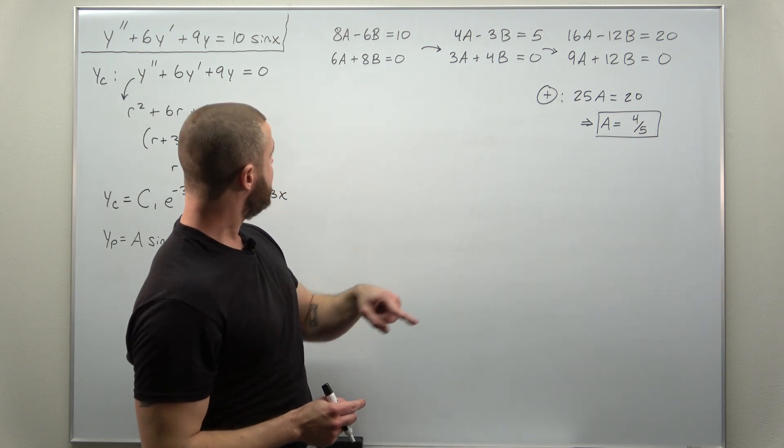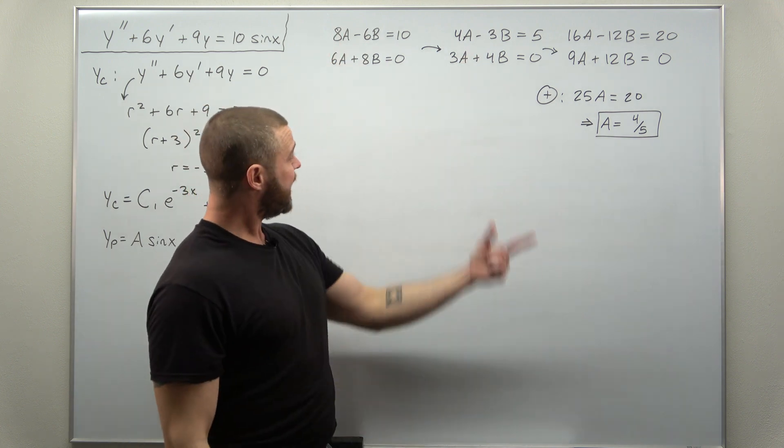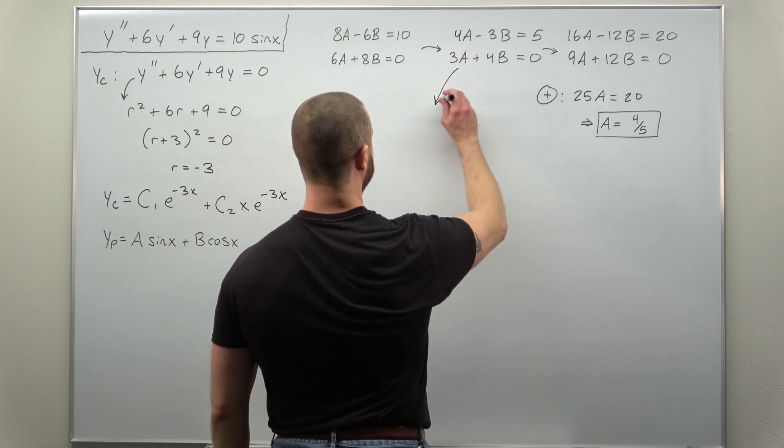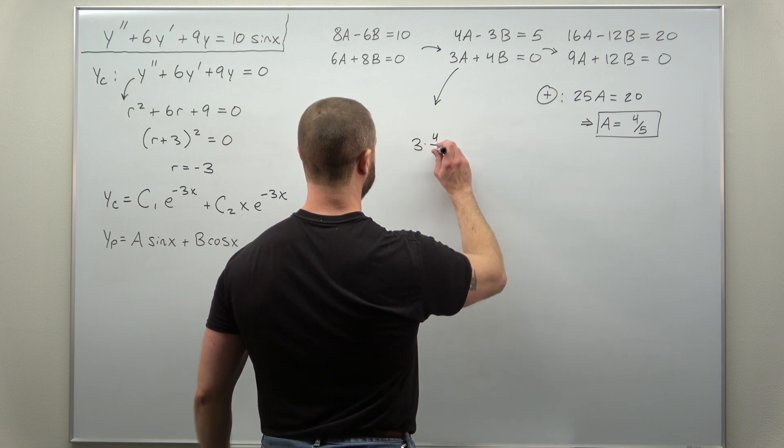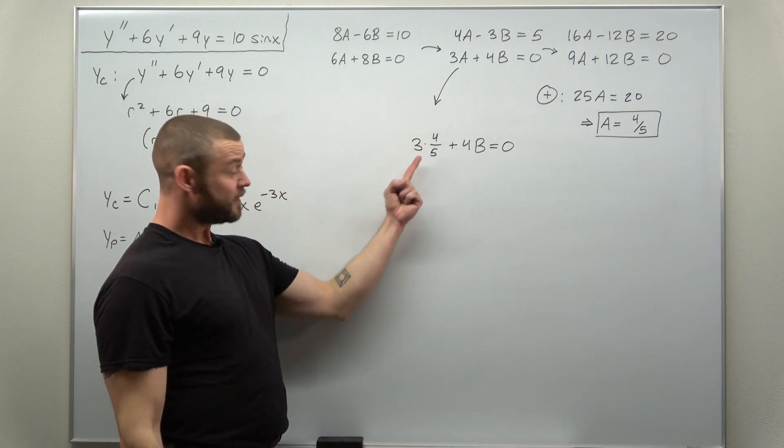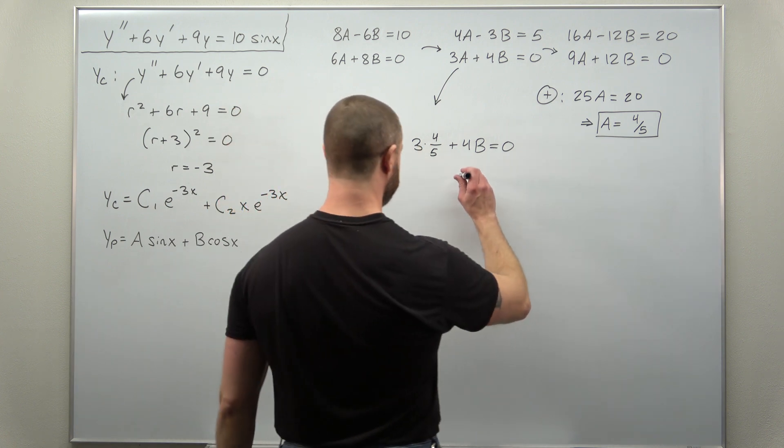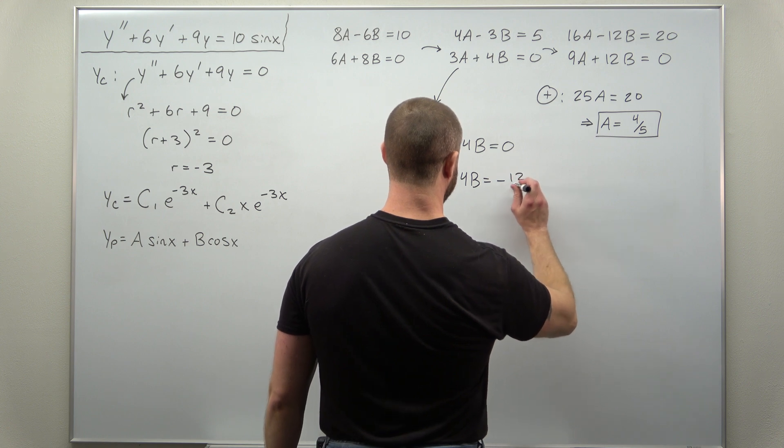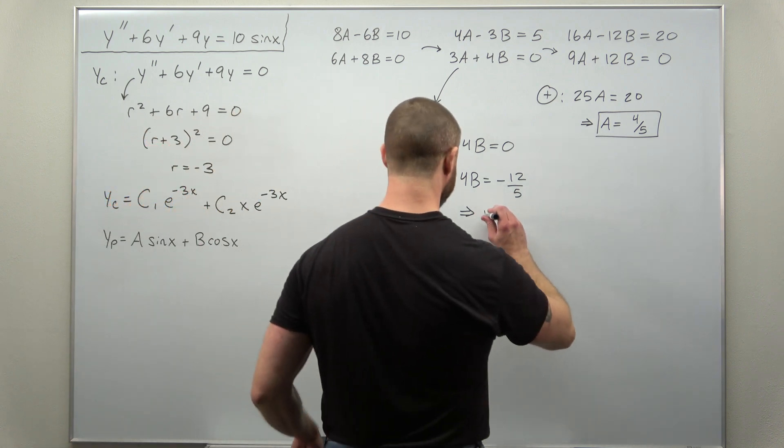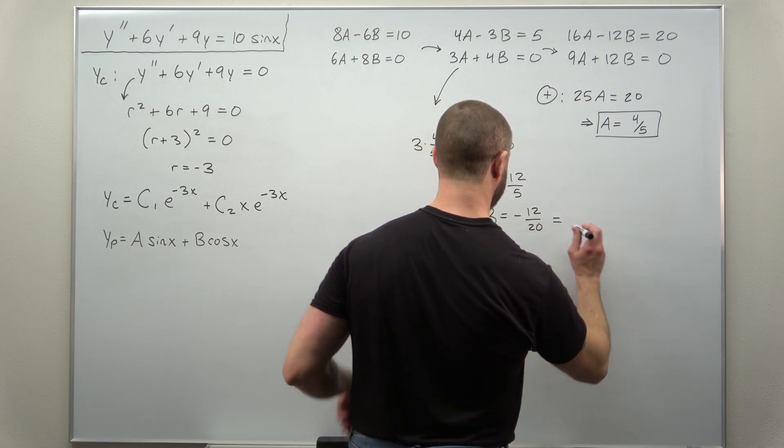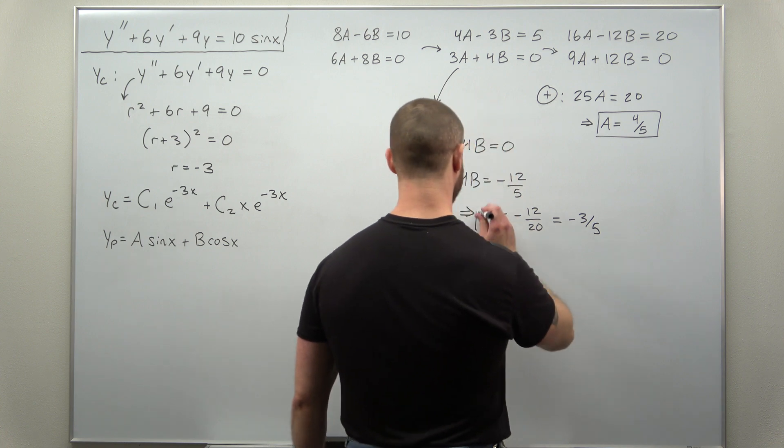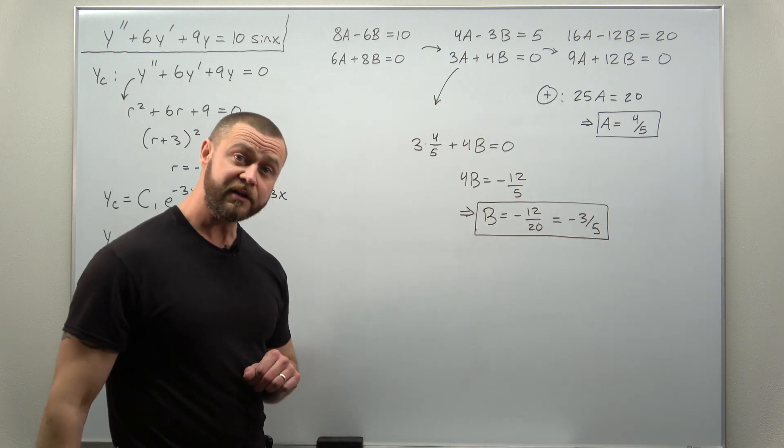Now we want to solve for b. We can plug that back into any equation. Personally, I like this one since the numbers are a little bit smaller. So we're going to plug in a as 4 over 5 plus 4b equals 0. Just do some basic math. That's 12 over 5. I'm going to subtract it to the other side. And we can easily solve for b. Divide both sides by 4. And it reduces to negative 3 over 5. That is your value for b.